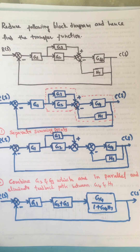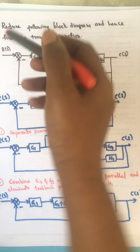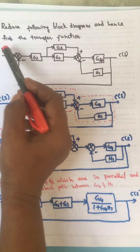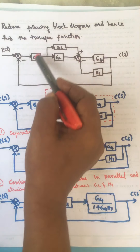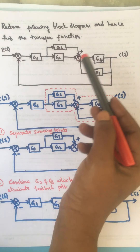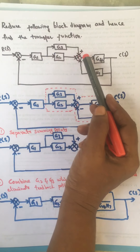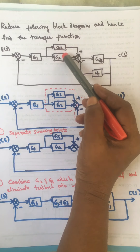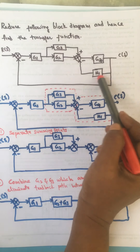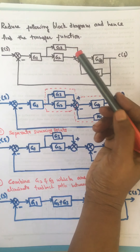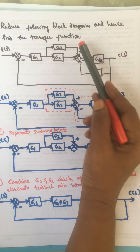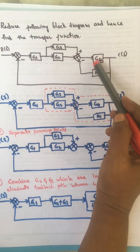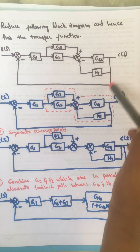Now we will discuss the problem on block diagram reduction. In this problem, we have to reduce the block diagram and find the transfer function. The first step is to find out which blocks are in parallel and which are in a loop. We have to clear all inner parallel blocks and inner loops first, then go for outer loops.